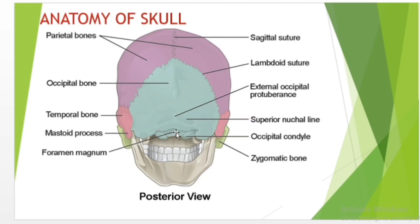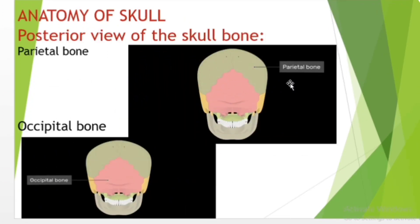On the base of the skull, the occipital bone contains the large opening of the foramen magnum, which allows for passage of the spinal cord as it extends from the skull. On either side of the foramen magnum is an oval-shaped occipital condyle. These condyles form a joint with the first cervical vertebra, which supports the skull at the top of the vertebral column.